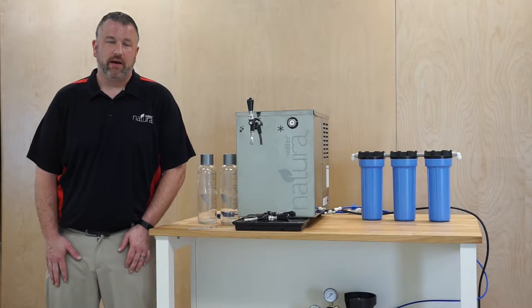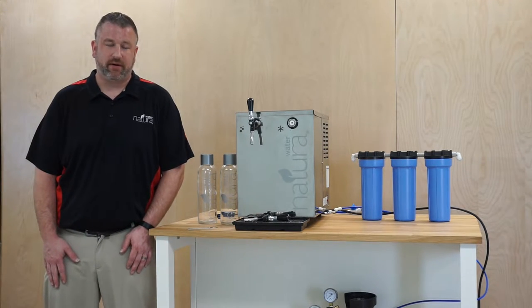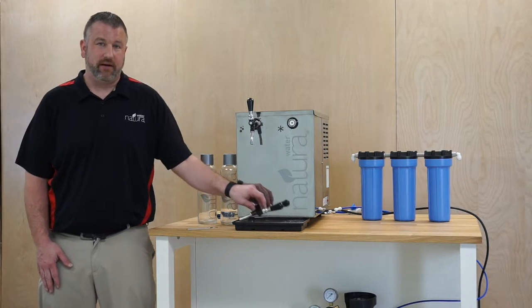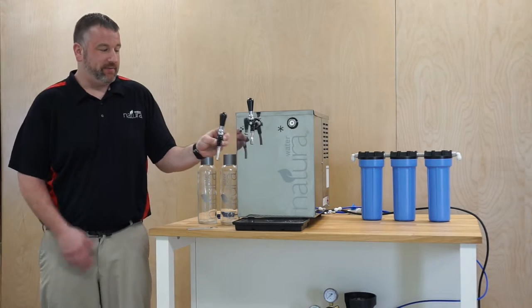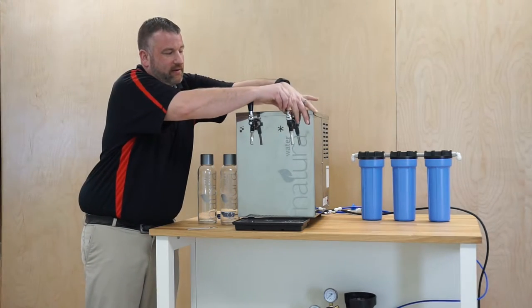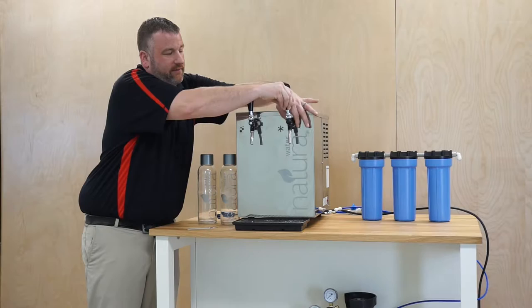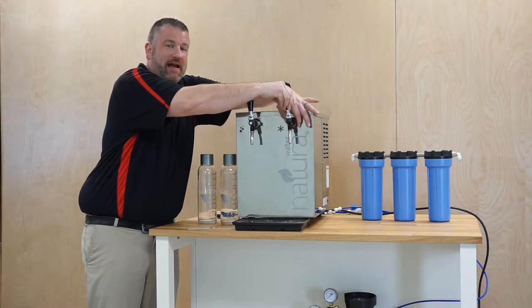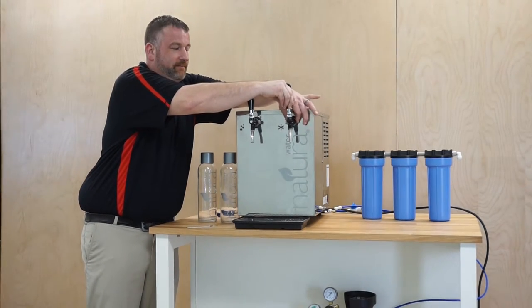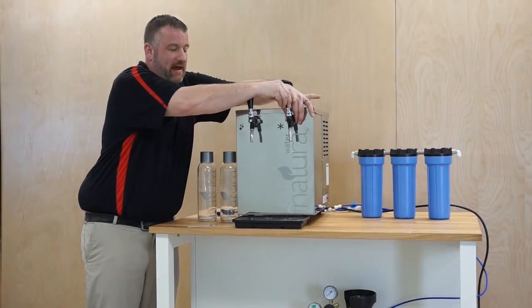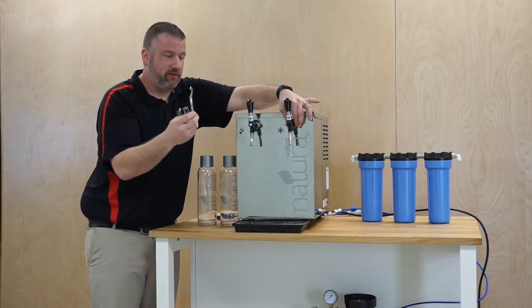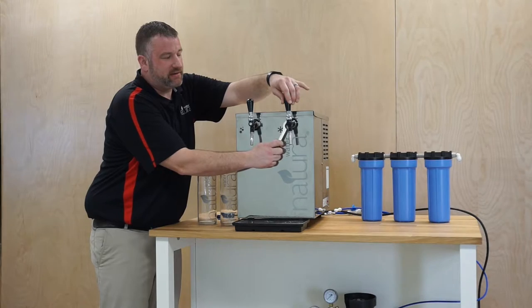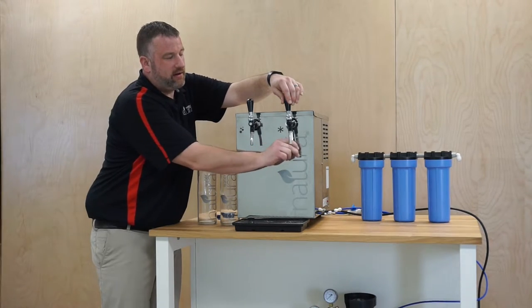After you install the CO2, the next step is to install the taps on your machine. Very easy to do. The tap, you just take and you connect it to the collar of the front of the machine, and you turn the collar counter-clockwise. Once you get it hand tight, you can use your spanner wrench. The spanner wrench connects to the holes on the collar, and you can just tighten it.